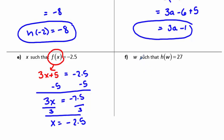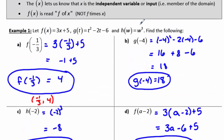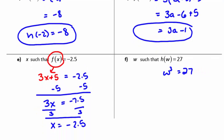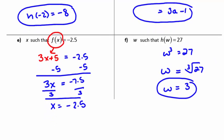And part f, we're going to do something very similar to part e. We're going to find w such that h of w equals 27. Let's go back and remember what the h of w function is. h of w is equal to w cubed. So we're going to replace our h of w here with w cubed. This is equal to 27, and we want to solve for the w value. So what number, when you cube it, gives you 27? Or what's the opposite of cube? The opposite of a cube is a cube root. So if you take the cube root of 27, you're going to get 3. 3 cubed is 27. So our value for w is 3.